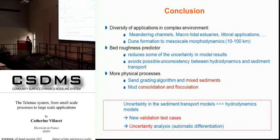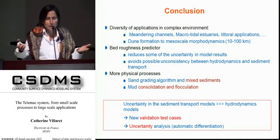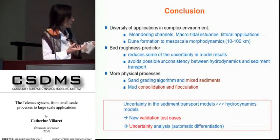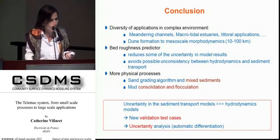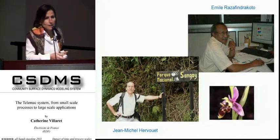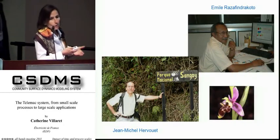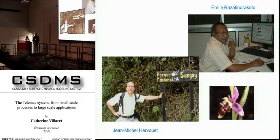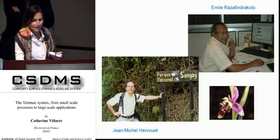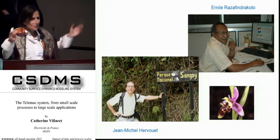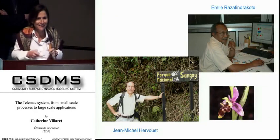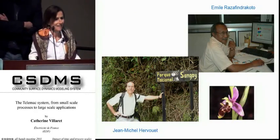We are also working on automatic differentiation of the code to get more quantitative information on model errors. These are the main people behind the system: Emil is the head of the project and Jean-Michel is the father of TELEMAC, having worked on the model development since 1987. Thanks for your attention — it was a challenge to give an overview of this big model. It's rated number one for number of lines in CSDMS, though I'm not sure if that's a good sign or not.